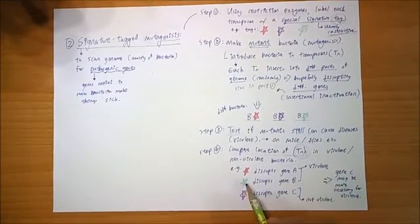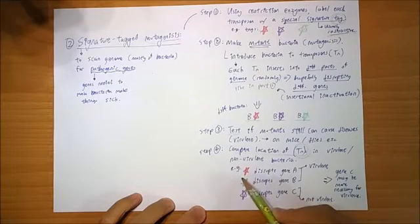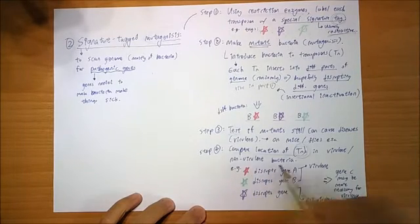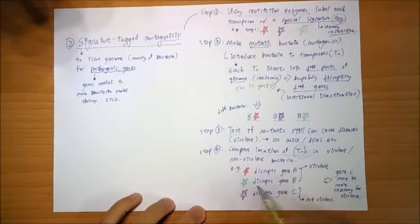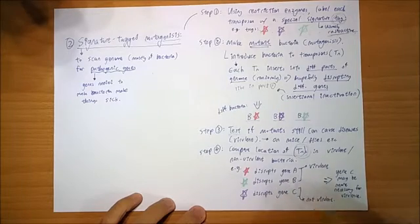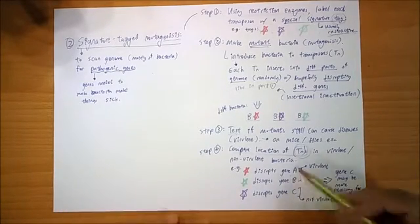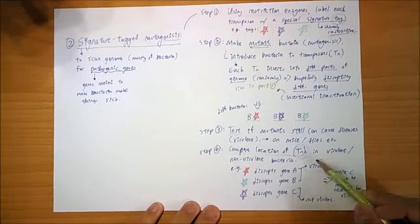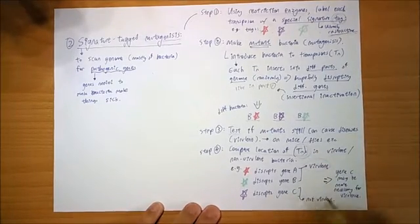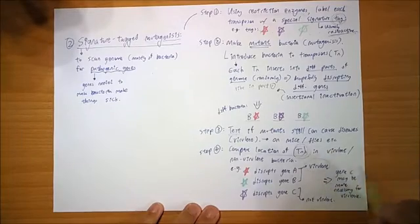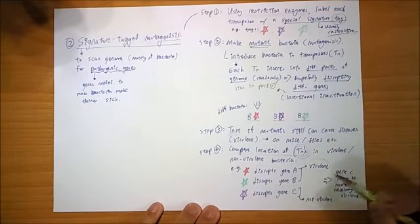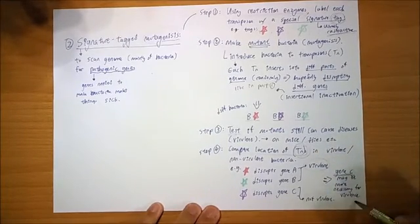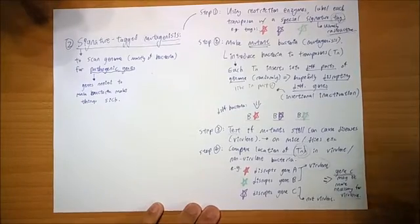Let's say this disrupts gene A, this disrupts gene B, purple disrupts gene C. And A and B happen to still be able to cause diseases, so are virulent. And C cannot cause diseases anymore. So from this, you can sort of guess that gene C is a bit more necessary for causing diseases.